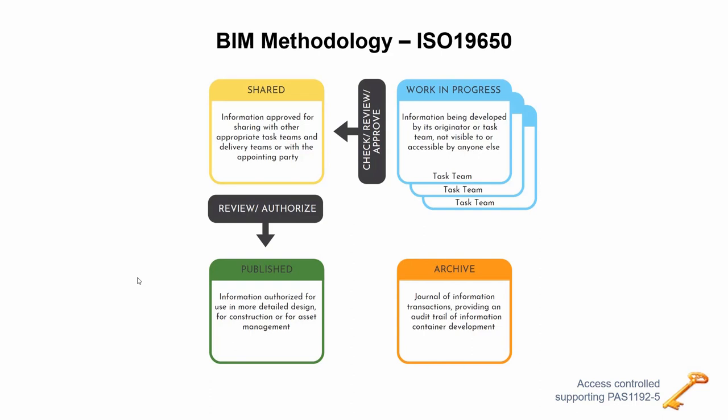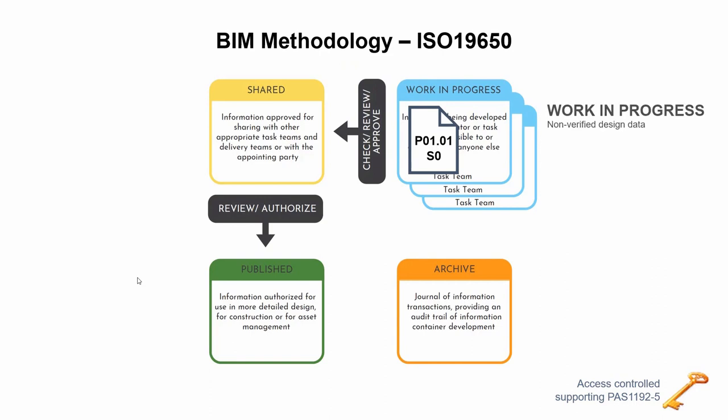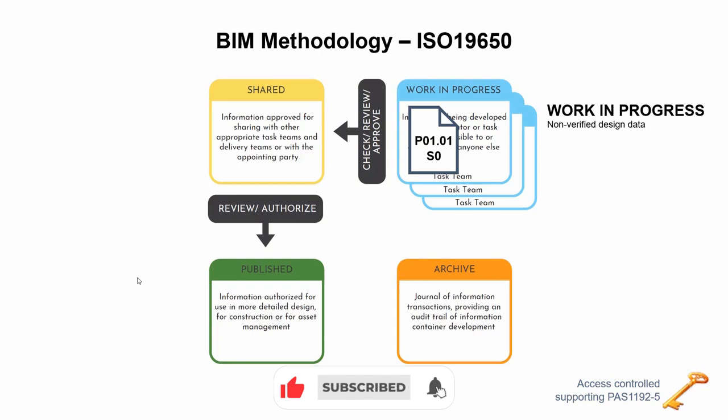Let's look at the concept of the ISO 19650 standard and how we apply that concept to ProjectWise. This diagram sets out the four main work stages for the majority of documents. Every time we create a document, it must start as a work in progress document with the suitability code of S0 and revision version of P01.